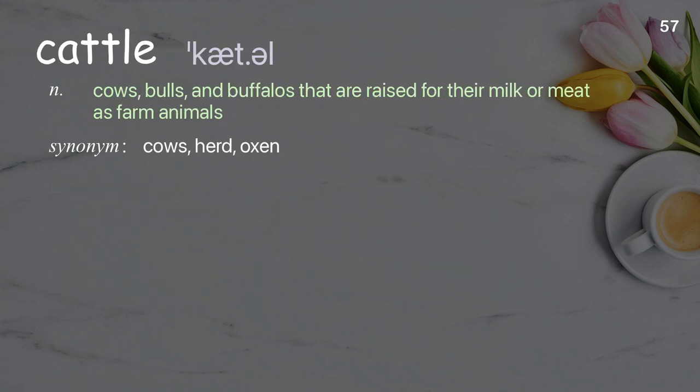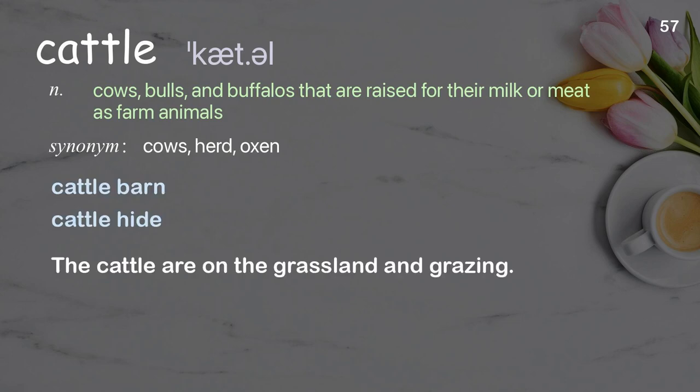Cattle: Cows, bulls, and buffaloes that are raised for their milk or meat as farm animals. Examples: Cattle barn, cattle hide. The cattle are on the grassland and grazing.